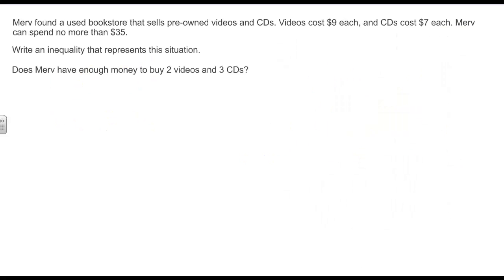Word problem. So, Merv found a used bookstore. It sells pre-owned videos and CDs. The videos cost $9 each, CDs cost $7 each. And Merv can't spend any more than $35, but it looks like it can go up to $35. I want to write an inequality that represents the situation. So, we've been dealing in two variables today. We're going to have to call one of these guys X. I'm going to call my videos X and my CDs Y.